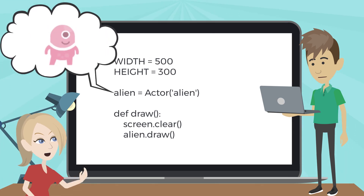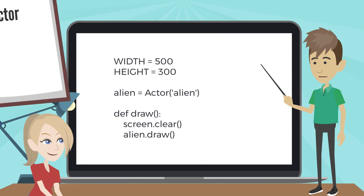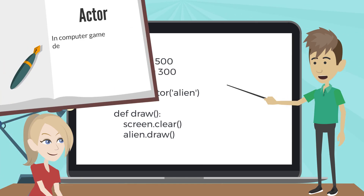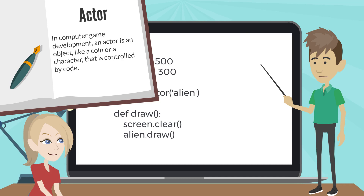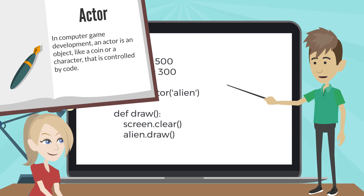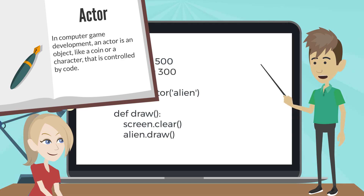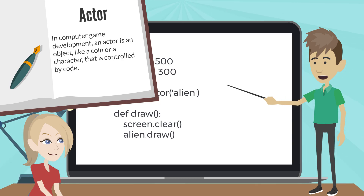What is the code doing? This creates a new actor called alien. What is an actor? In computer game development, an actor is an object, like a coin or a character, that's controlled by code. An actor can be drawn on the screen, moved around, and even interact with other actors in the game.